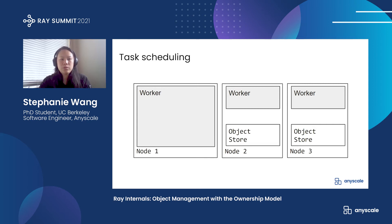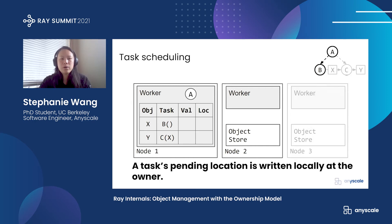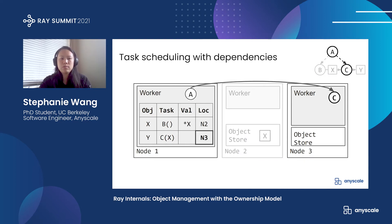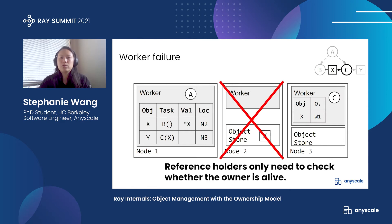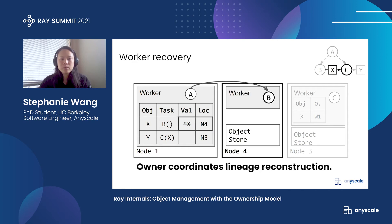Here we have several worker nodes that each host an object store, and the system metadata will be stored at the workers. We'll use an example where we have task A that submits task B, and then passes the returned object ref to task C. To schedule B, the owner first writes the future location of the task before sending B to node 2 for execution. Once B finishes, it stores the return value in distributed memory and then responds to X's owner. Next, we schedule C onto worker 3. And since C has a reference to B's return value, it also receives the address of X's owner. Now let's say that there's a failure while worker 3 is trying to dereference X. We'll leave it to X's owner to detect the failure.